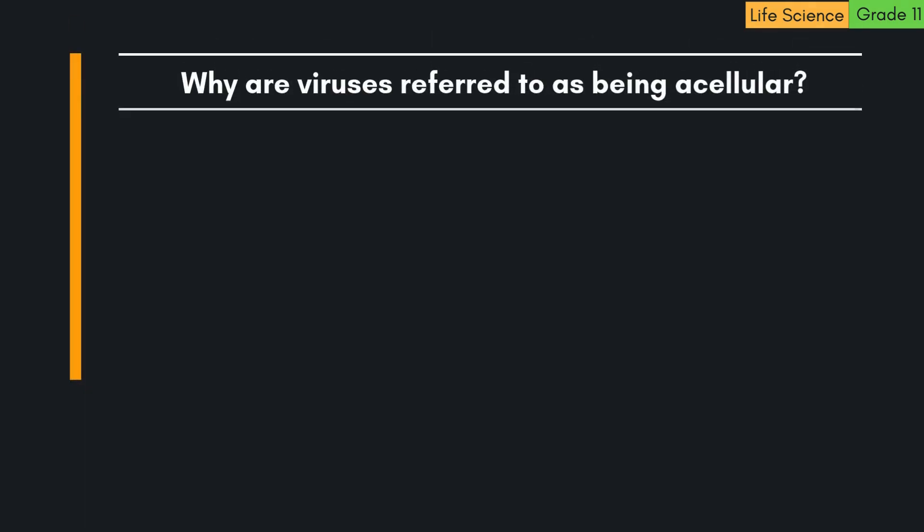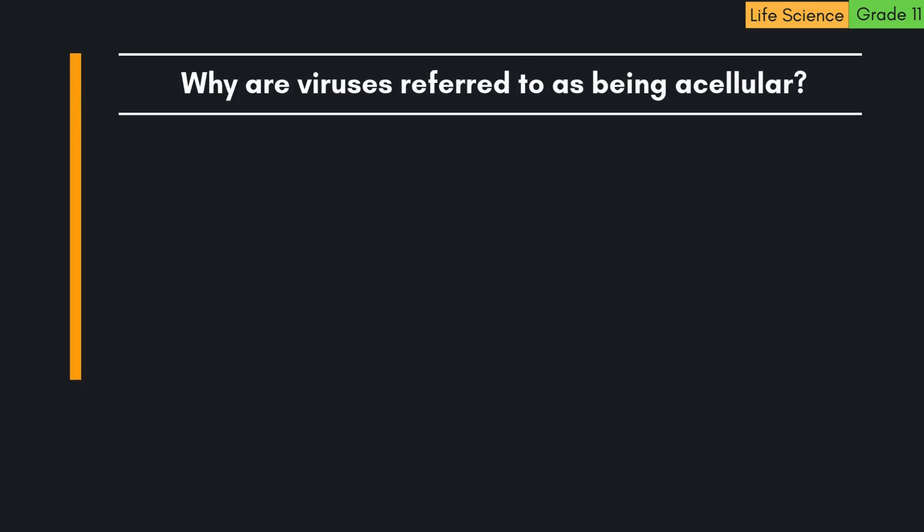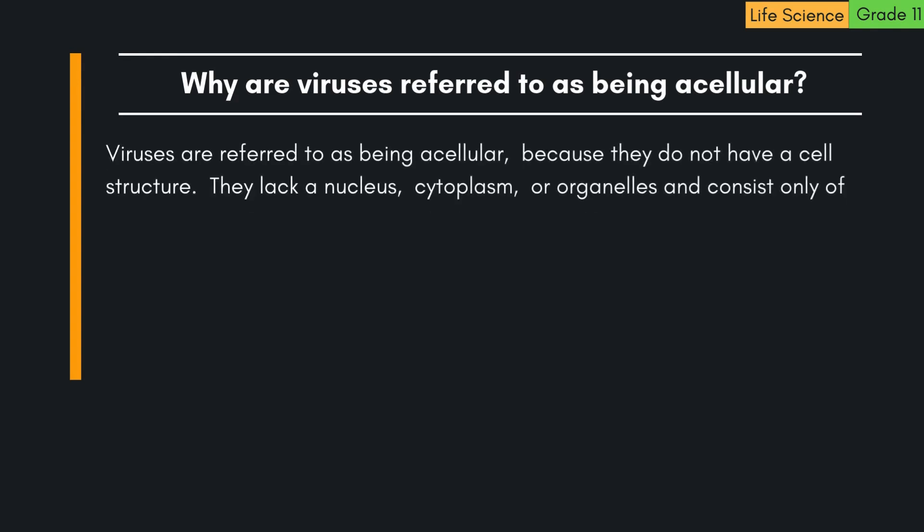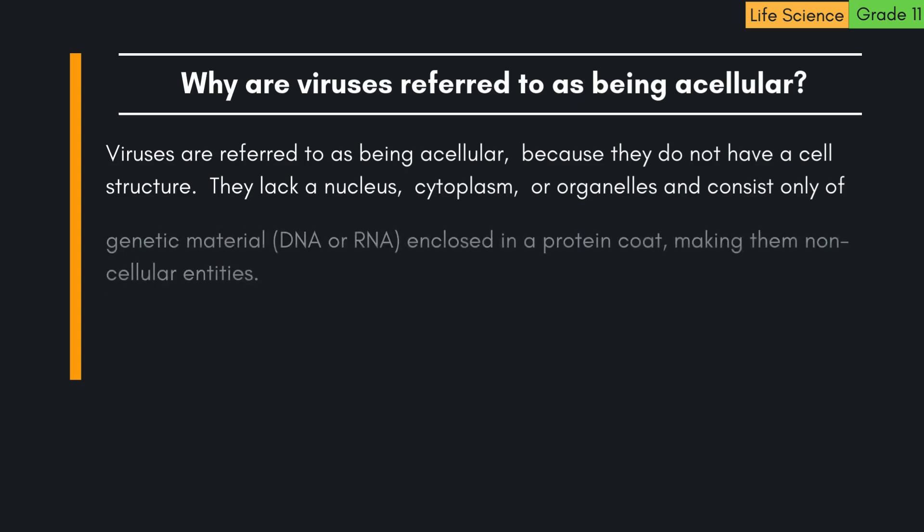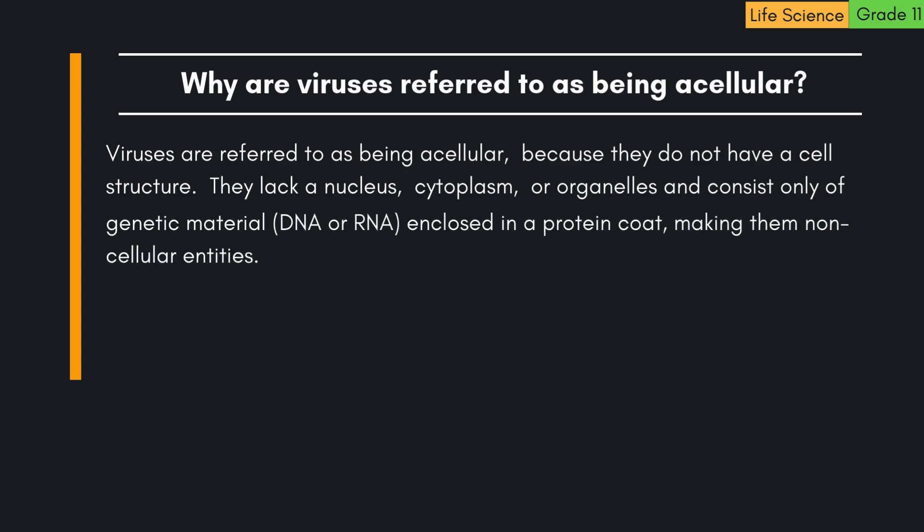Question: Why are viruses referred to as being acellular? Viruses are referred to as being acellular because they do not have a cell structure. They lack a nucleus, cytoplasm, or organelles and consist only of genetic material — DNA or RNA — enclosed in a protein coat, making them non-cellular entities.